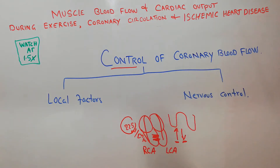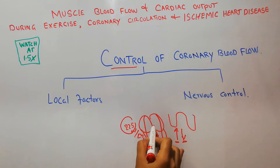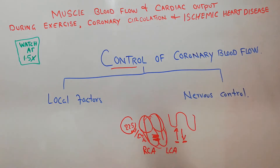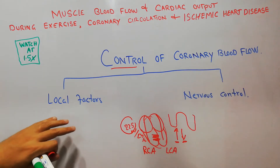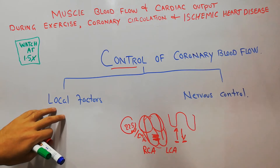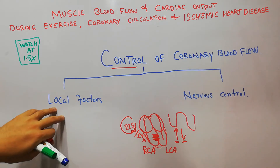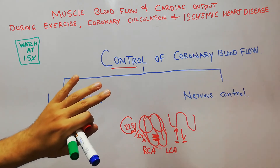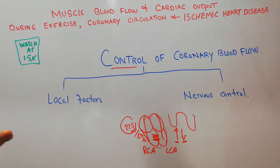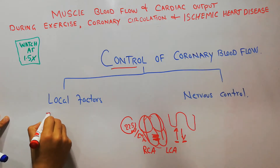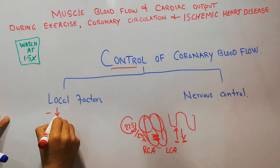The local factors act locally at the level of the heart. The most important factor among the local factors that plays an important role in increasing coronary blood flow is the decrease in oxygen.